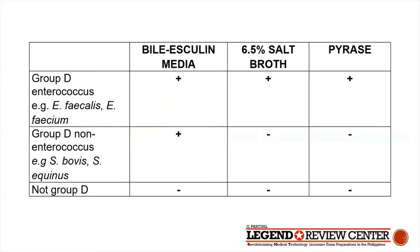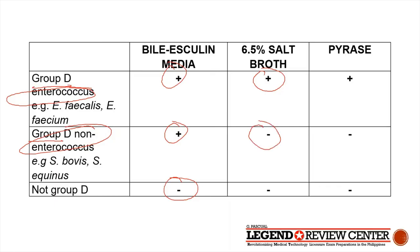To summarize tests for gamma-hemolytic strep: Group D includes Enterococcus and non-Enterococcus species. All Group D organisms — whether Enterococci or non-Enterococci — are positive in bile esculin. Other Lancefield groups are negative. To differentiate Group D Enterococci from Group D non-Enterococci, use the 6.5% salt broth — Enterococci are positive, non-Enterococci are negative. The PYR test is also positive for Group D Enterococci but negative for Group D non-Enterococci.